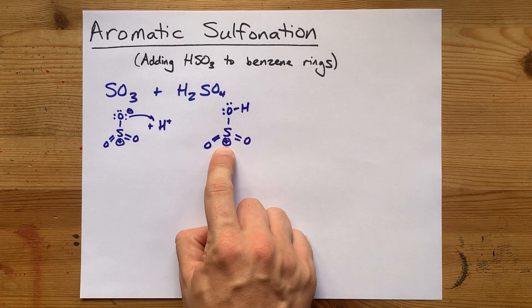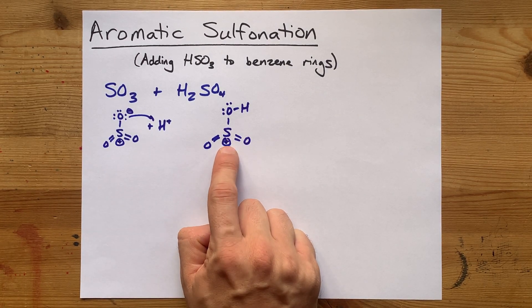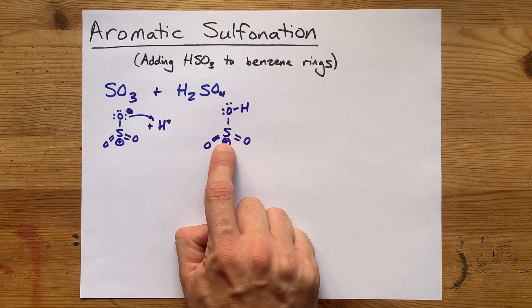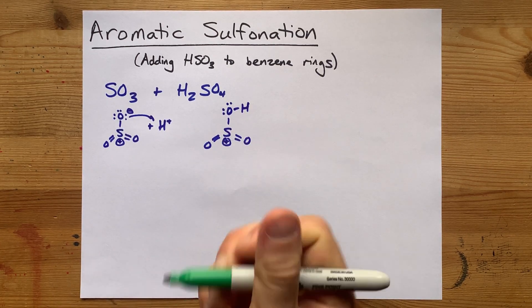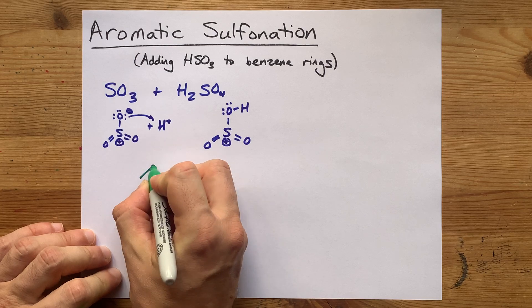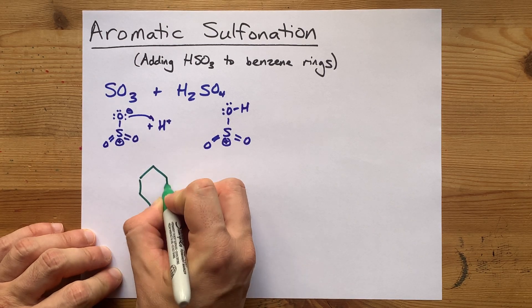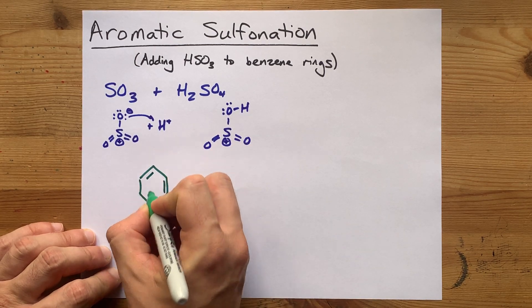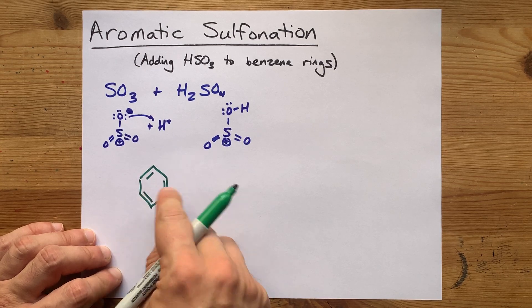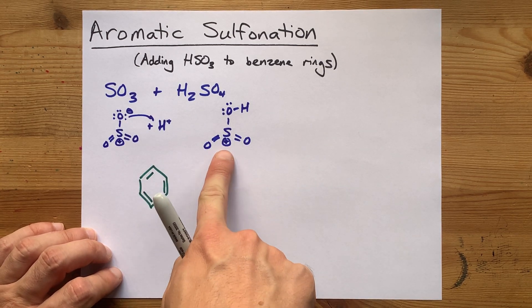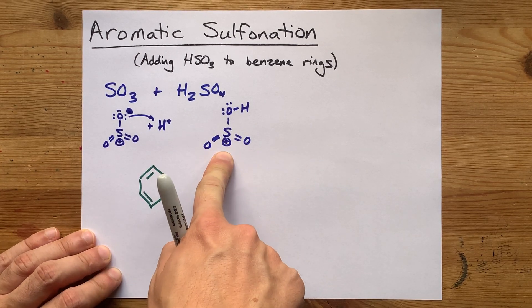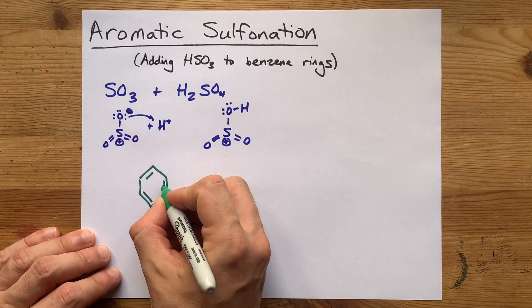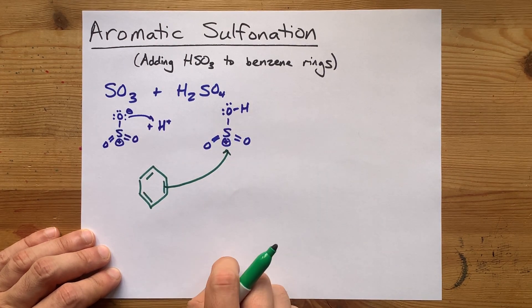Now that positive formal charged sulfur is ripe for attack from a benzene. The electrons in benzene are delocalized, but with a strong positive charge to attract the electrons, you can get an attack.